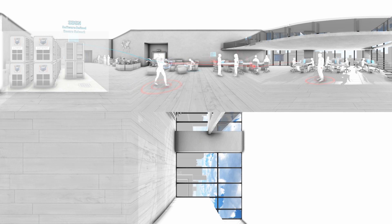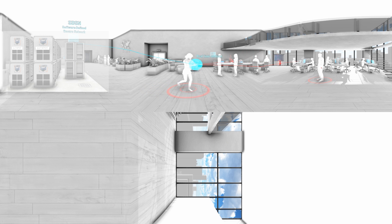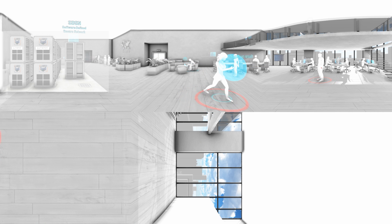Juniper automatically analyzes in real time the traffic generated, thanks to artificial intelligence and big data. Here, the behavior of the device is normal.